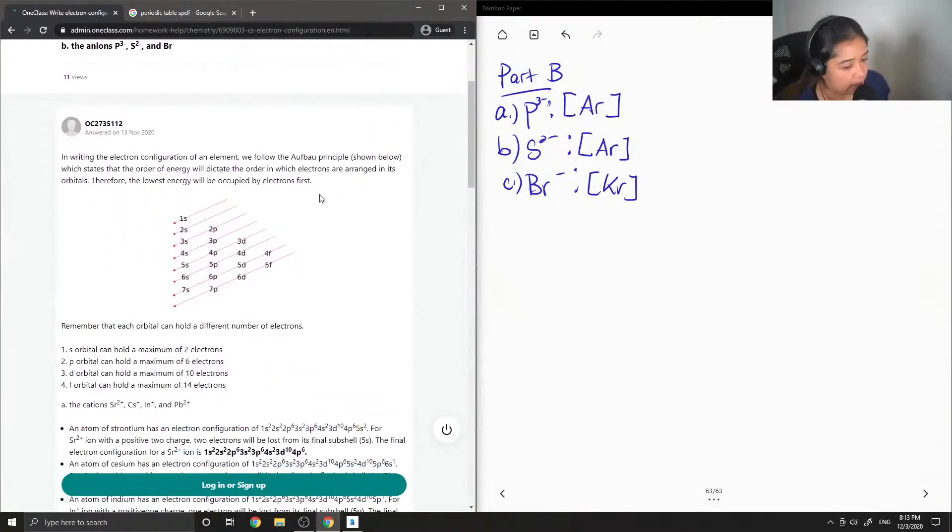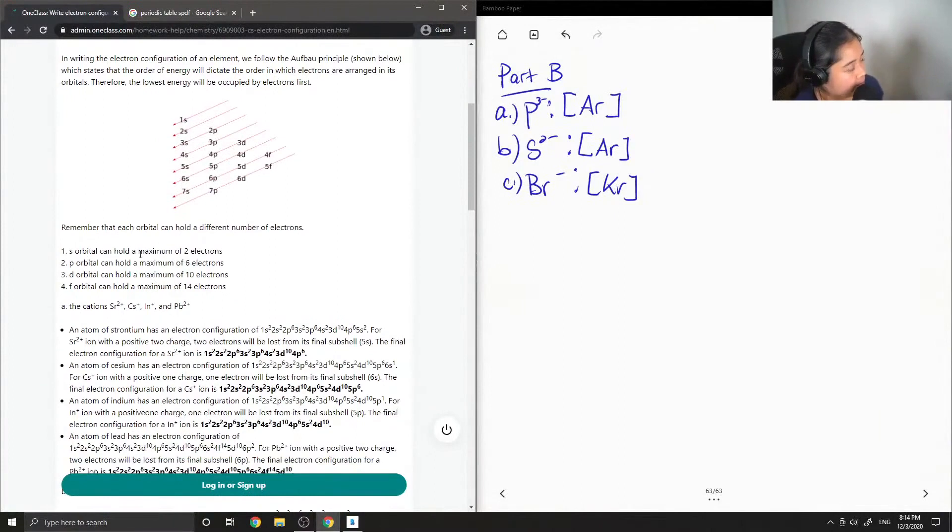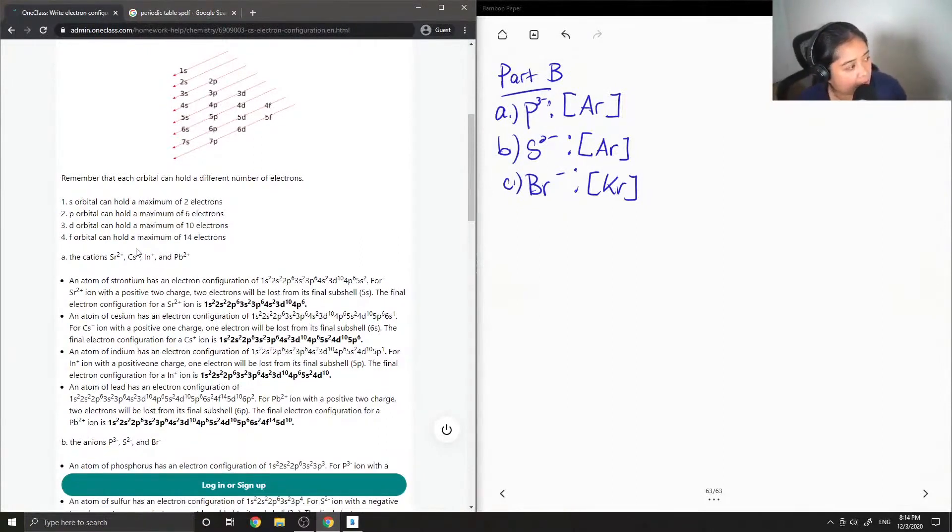Okay, so now we can see what our junior tutor said. In writing the electron configuration of an element, we follow the aufbau principle shown below, which states that the order of energy will dictate the order in which electrons are arranged in its orbitals. Therefore, the lowest energy will be occupied by electrons first. So another method of writing the electron configurations is to kind of write them in increasing numerical order. So they start with the s and they go up to 7. And then they align with 2p going up to 7, and then 3 going down to 6, and then 4, 5f. Remember that each orbital can hold a different number of electrons. S orbital can hold a max of 2. The p can hold a maximum of 6. D orbital holds a max of 10. And then f holds a max of 14.